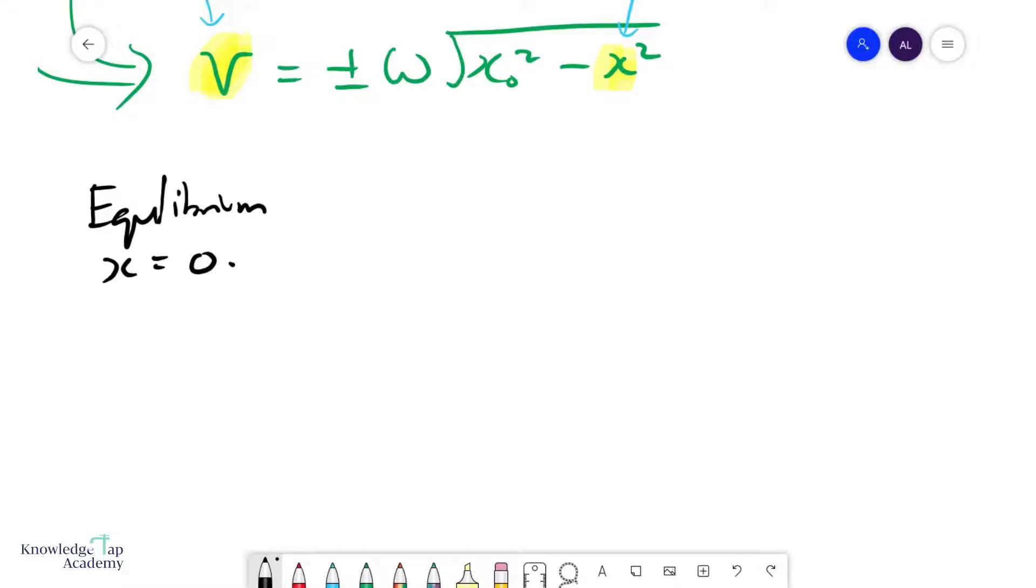And so if we sub this value into this formula, you'll be able to get an expression for the maximum speed, because the speed is always maximum at equilibrium. If we do that, v equals plus minus ωx₀, and so that's the maximum speed formula of an object in SHM.